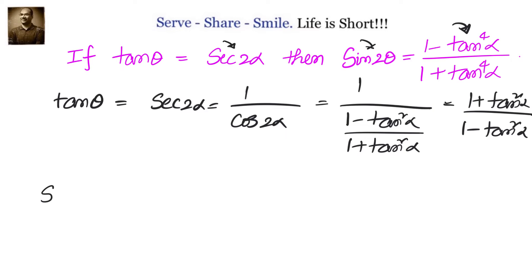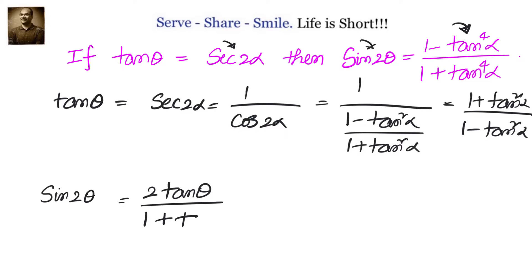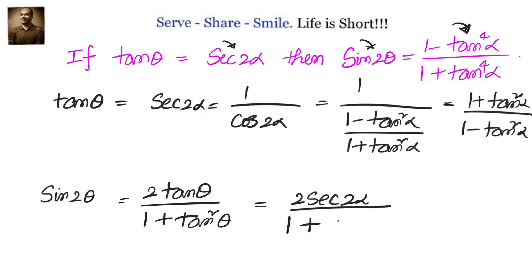Now, what is sin 2θ? Sin 2θ in terms of tan θ is given by 2 tan θ divided by 1 plus tan² θ. But we know that tan θ equals sec 2α, so we can write 2 sec 2α divided by 1 plus sec² 2α.